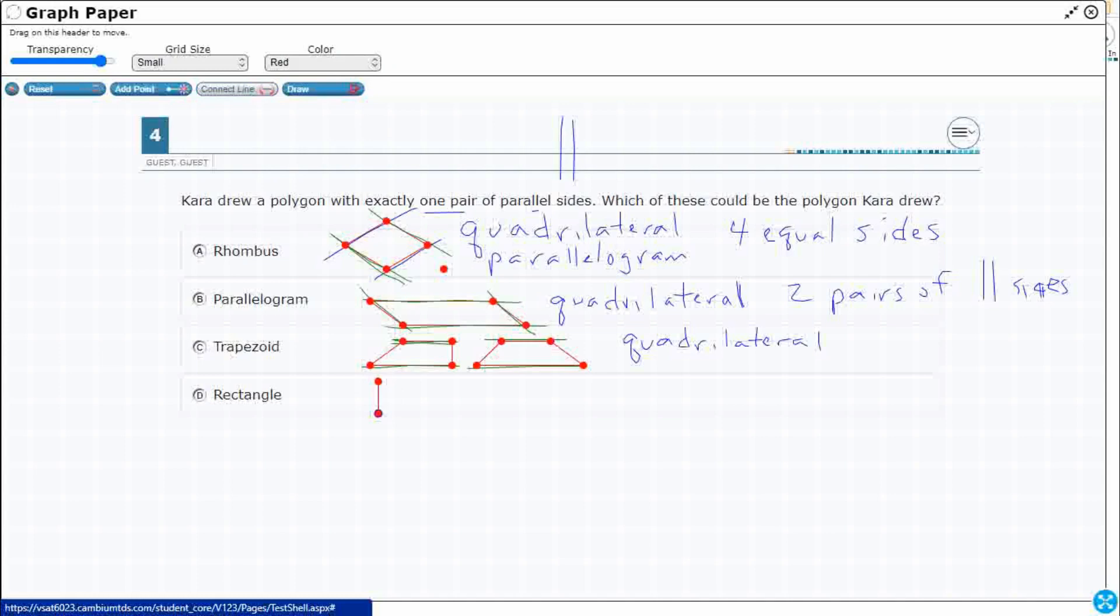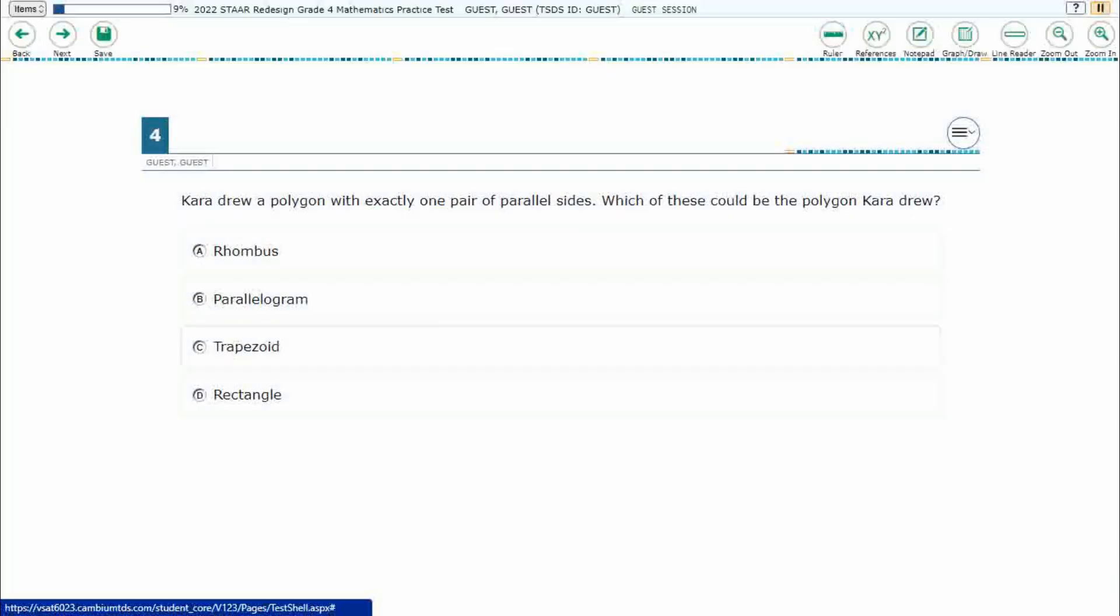We know what a rectangle looks like, and it is a parallelogram. It has two sets of parallel sides, so we can't choose it. So my answer is C.